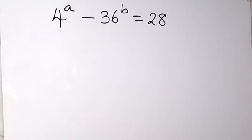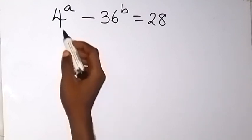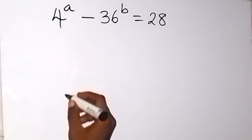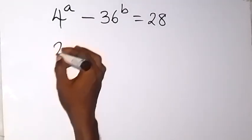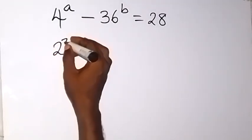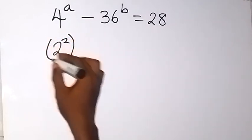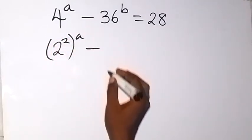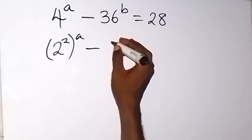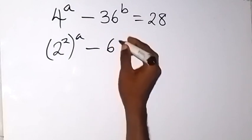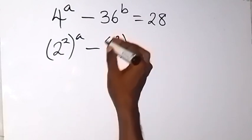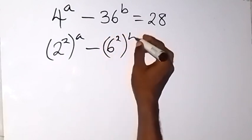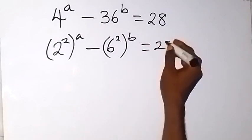Thank you for joining us. Here we want to solve this problem. Let's change 4 to 2 raised to power 2, then raised to power a, then minus 36 changed to 6 raised to power 2, then raised to power b, equals to 28.